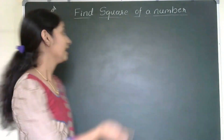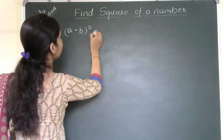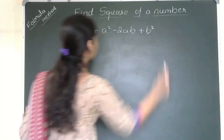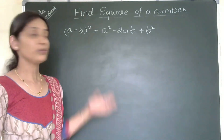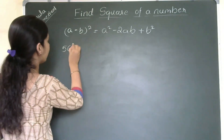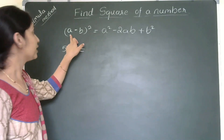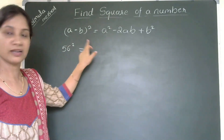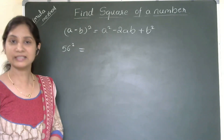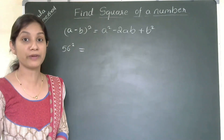I am going to start with the (a − b)² formula. We know (a − b)² = a² − 2ab + b². As our first example, I am taking 56. We need to find the square of 56. I need to rewrite 56 in the form of something minus something. If I consider 56, the nearest multiple of 10 is 60. Taking base 10 will make it very easy to find the square.